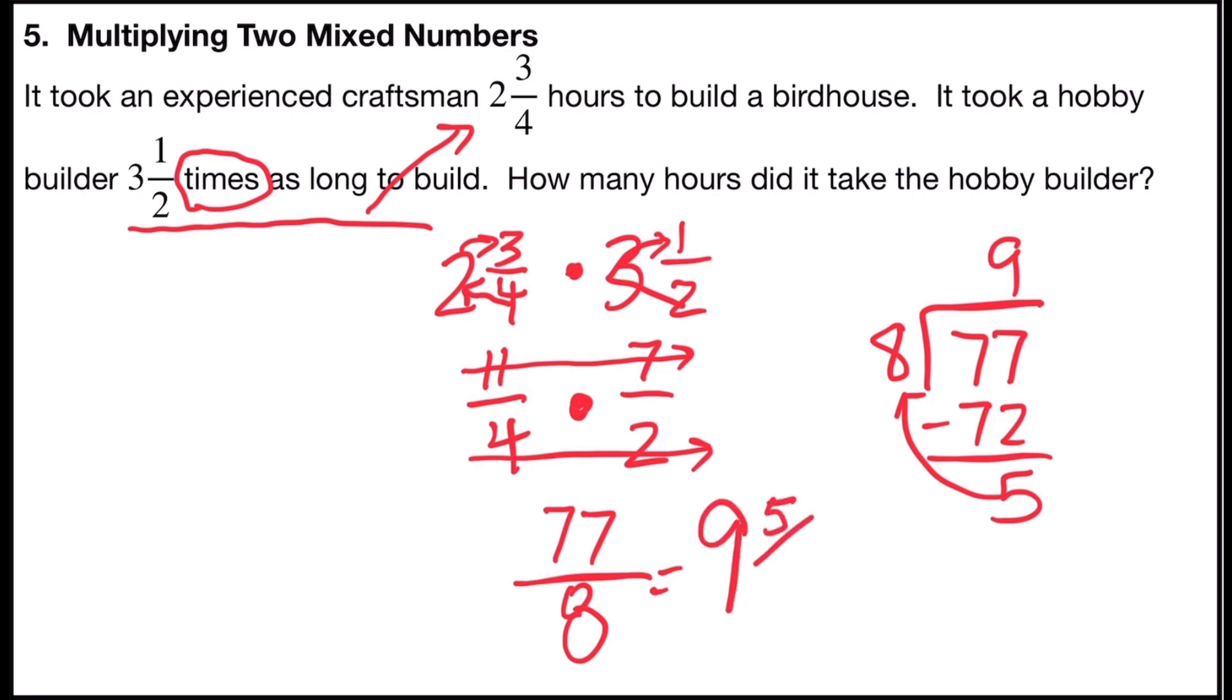So 77 over 8 would be equal to nine and five out of eight hours. It would take the hobby builder to build the birdhouse.